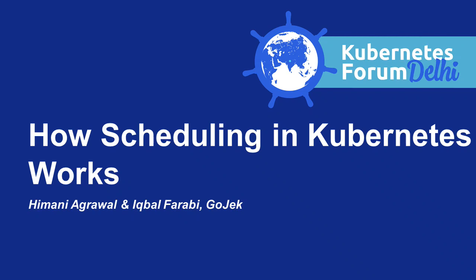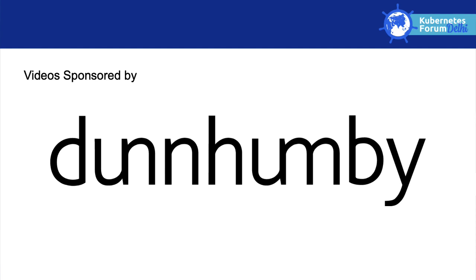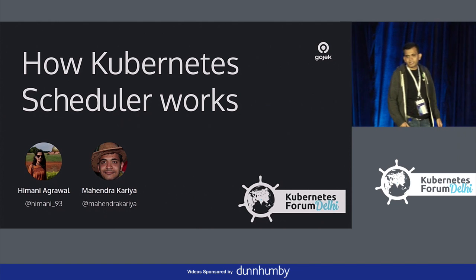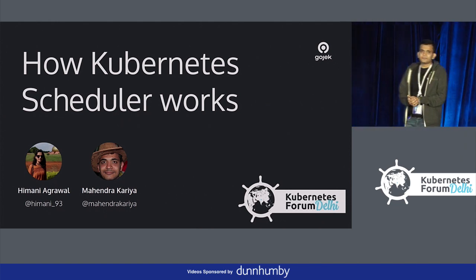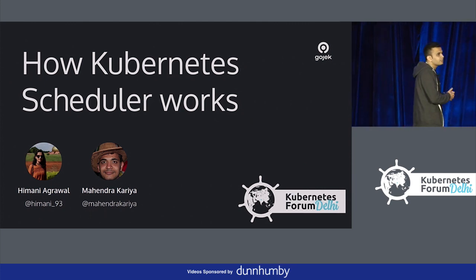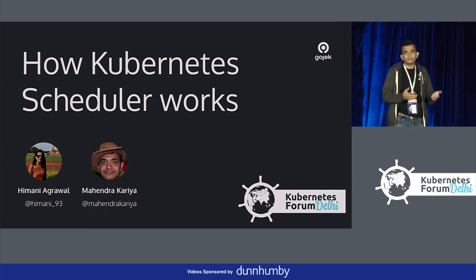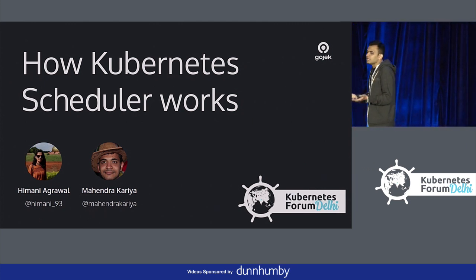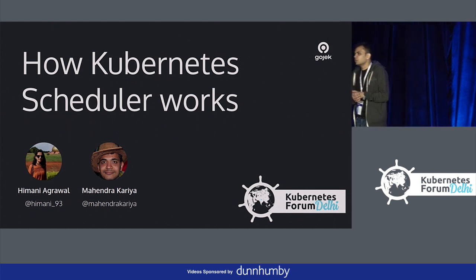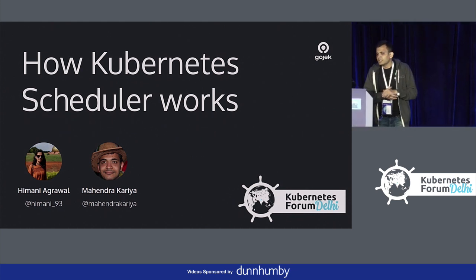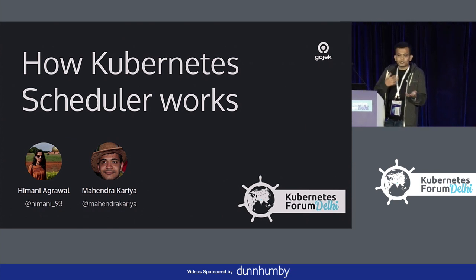Good afternoon Delhi. Apologies about the delay — there were some technical issues as always happens in conferences. We are here to talk about how a Kubernetes scheduler works. I am Mahindra and she is my colleague Himani. Both of us work for Gojek. Most of you would have heard about Gojek — we are one of the first decacorns of Indonesia, into ride-hailing, payments, food delivery and a whole bunch of utilitarian services.